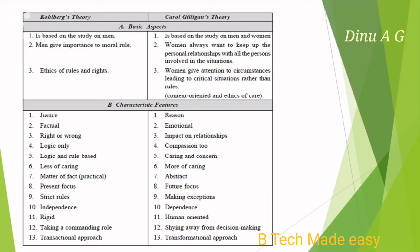Comparing Kohlberg's theory and Gilligan's theory: the first point is that Kohlberg's theory is based on the study of men, whereas Gilligan's theory is a study of both men and women. The second point is that men give importance to moral rules, while women always want to keep up personal relationships with all persons involved. The third point concerns ethics of rules and rights — according to Gilligan, women give attention to circumstances leading to critical situations rather than rules. Women consider circumstances and situations more important than rules, but according to Kohlberg's male-oriented theory, they give importance to rules and rights.